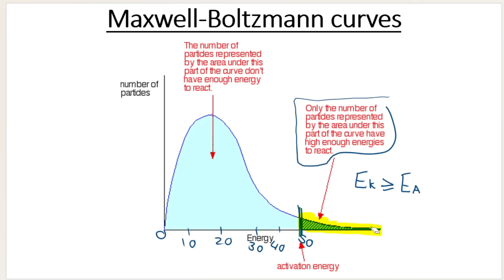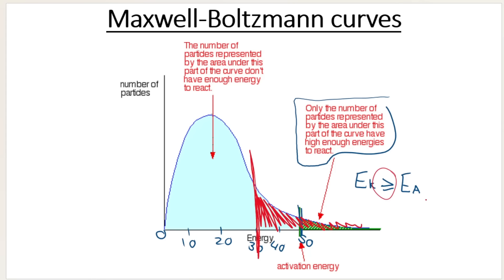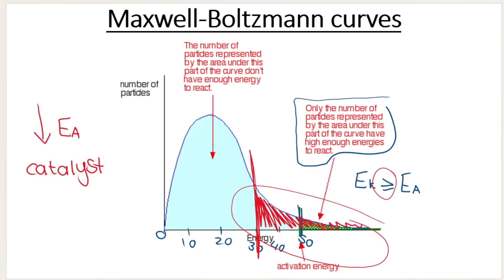How can we make sure we have more particles with enough energy? If I take the activation energy, currently at 50, and move it to, say, 30, can you see that now all of these additional particles have enough energy equal to or greater than the activation energy? A catalyst decreases the activation energy. That's why a catalyst increases the rate of reaction — because more particles have kinetic energy greater than or equal to the activation energy.